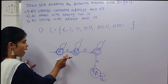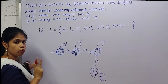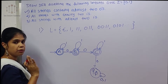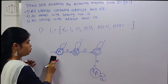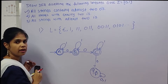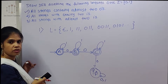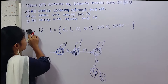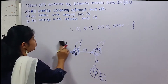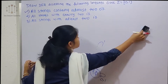So using this finite automata, we can accept a maximum of two zeros. We can also show the transition table, acceptance, and rejection cases for this DFA. Now we will move to the second example.